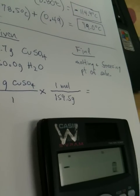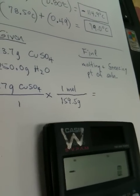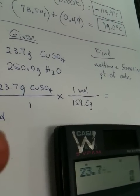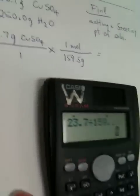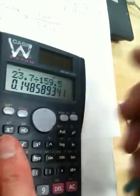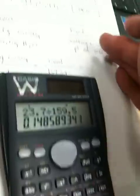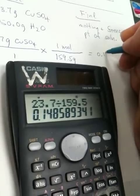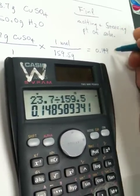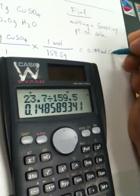And now we're halfway there to getting the molality. Yeah, 23.7 divided by the 159.5. Okay, so this is going to be the moles of copper sulfate. So our moles is going to be 0.149, and that's moles of copper sulfate.